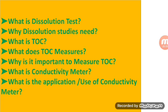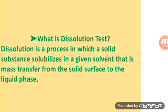QC and QA are interrelated because we know that in QC, quality control tests are carried out, and in the QA department, quality assurance is done. QC and QA are interrelated, so the first question is: what is dissolution test?